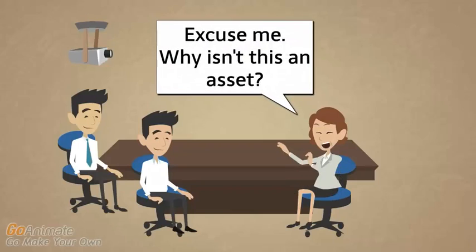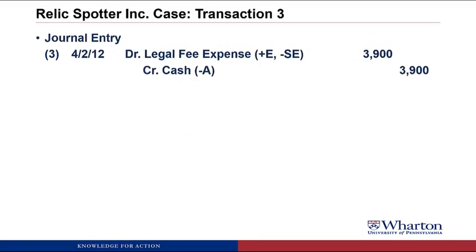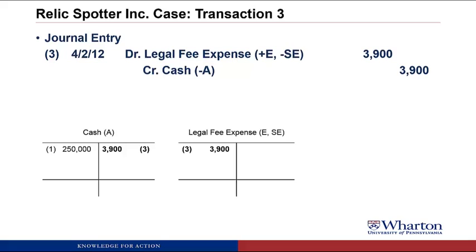Why isn't this an asset? You could argue there's a future benefit in that we get to operate the business forever once incorporated, but the rules are now explicit — this kind of expenditure must be expensed immediately. Let's post this to T-accounts: we bring back our cash T-account and put $3,900 on the credit side with a little '3' to indicate transaction number three, and we create a T-account for legal fee expense with $3,900 on the debit side.